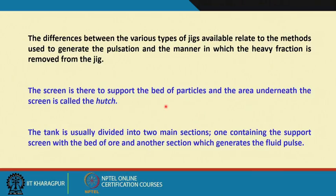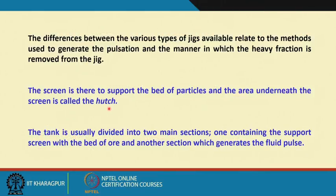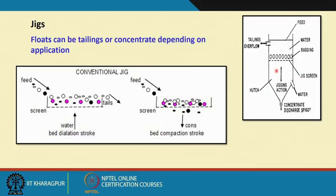After pulsation is done a few times, there is a stratified bed — particles reorient themselves based on density and size. If you feed a discrete size range of particles, the segregation will be such that only denser particles form the bottom most layer and lighter fraction sits on top. The screen is there to support the bed of particles — during suction, all particles would go down, so you need the screen support. The area underneath the screen is called the hutch.